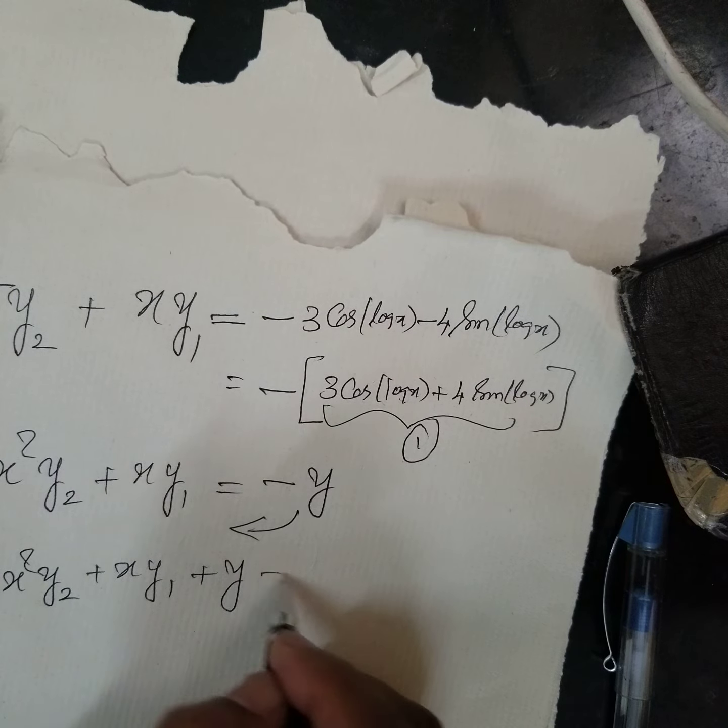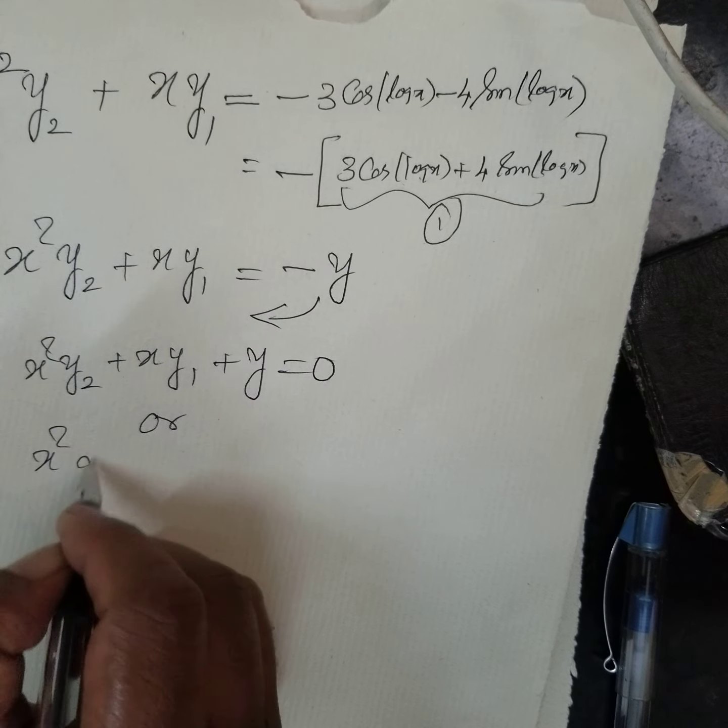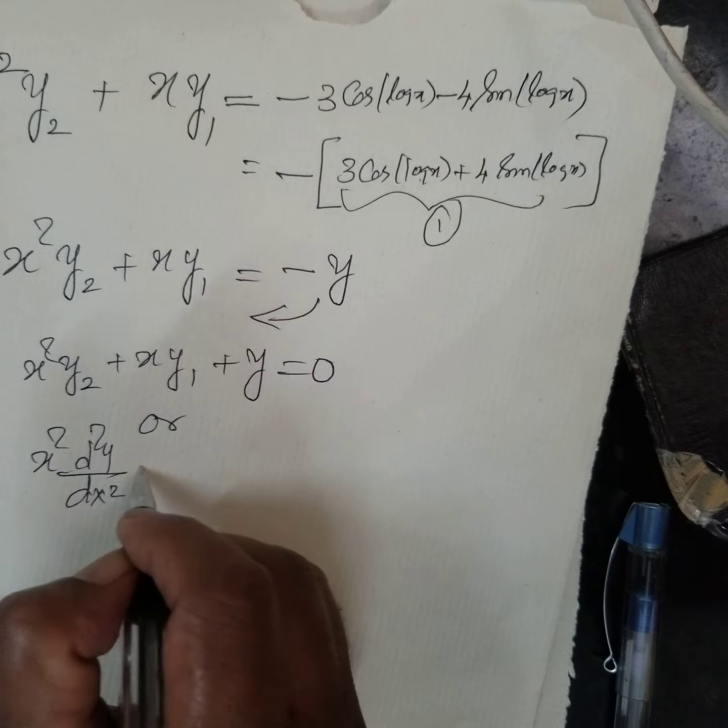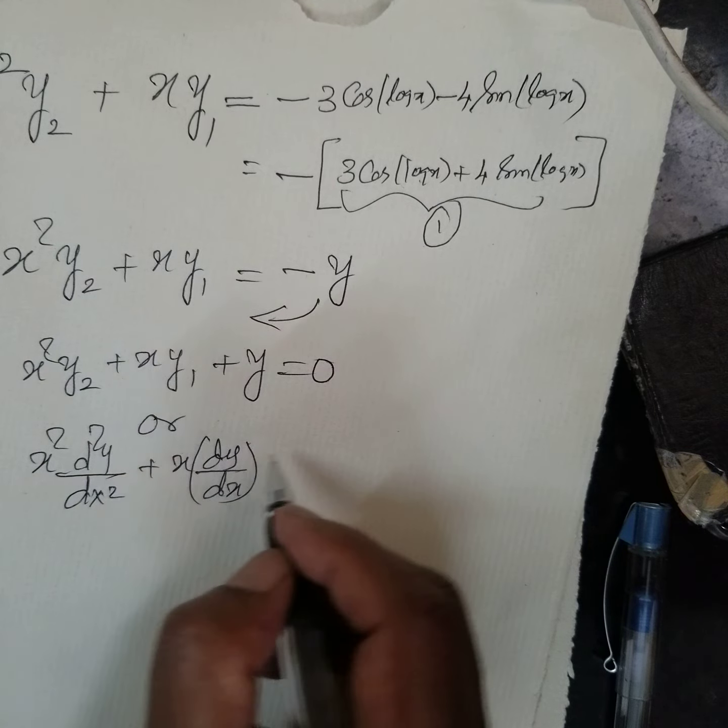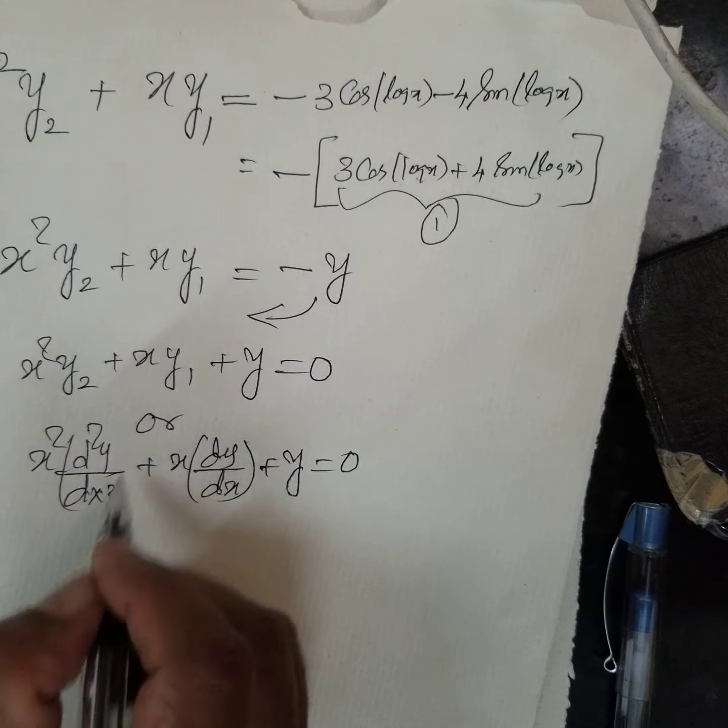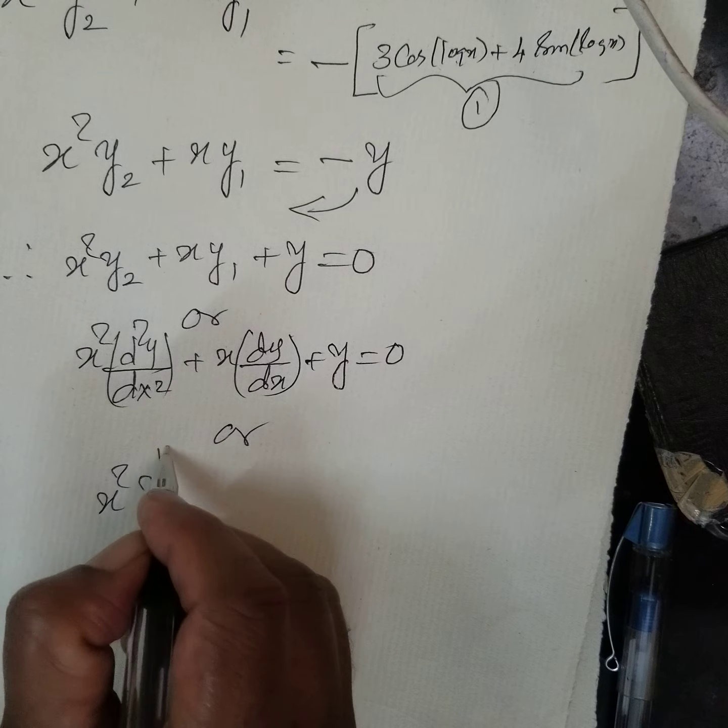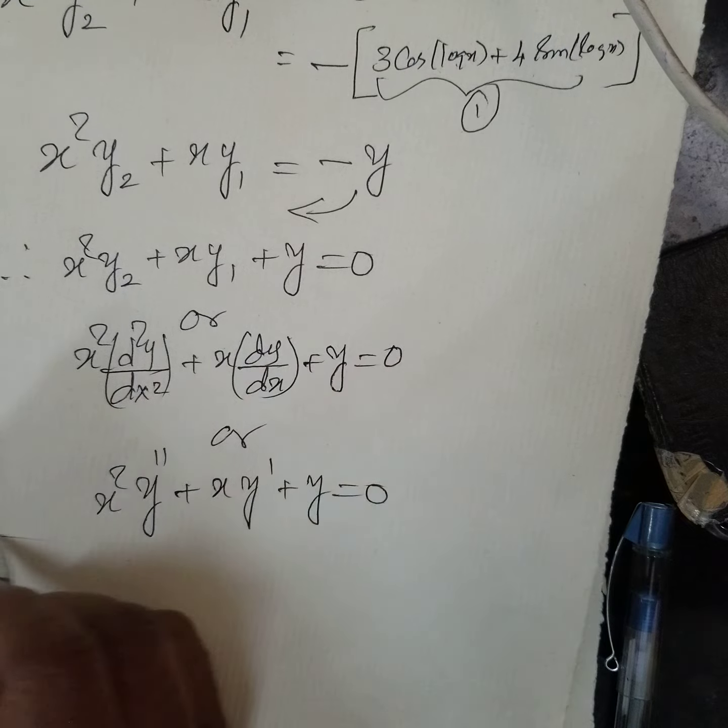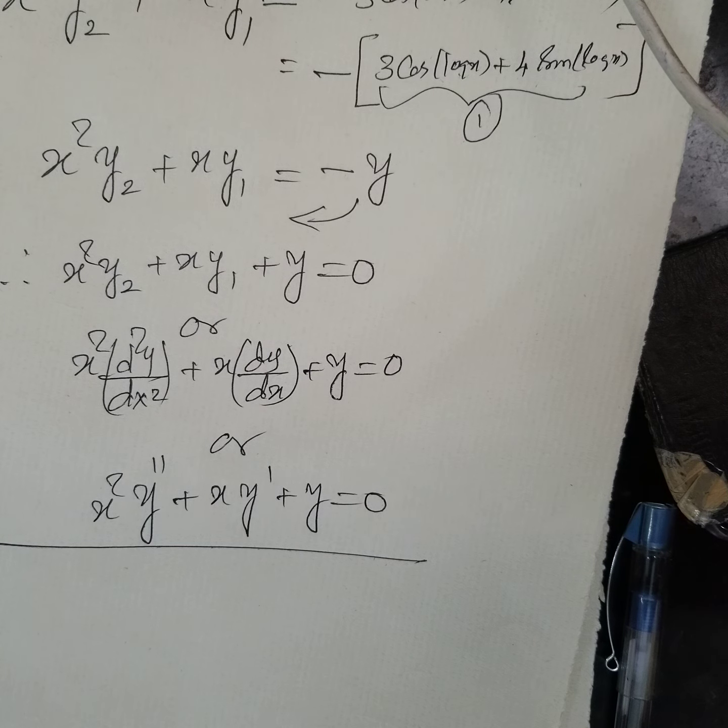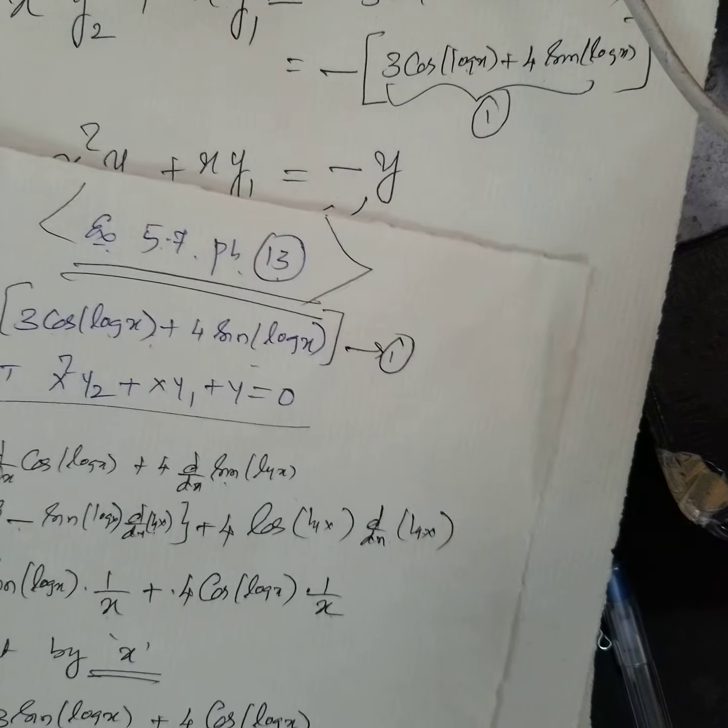Therefore, x square y2 plus x y1 plus y equal to 0. Or sometime, x square d square y by dx square plus x dy over dx plus y equal to 0. Or they may ask you, write x square y double dash plus x y dash plus y equal to 0. There are so many possible ways of asking these questions. Understood? Therefore, this is 13th question on successive differentiation. We have done.